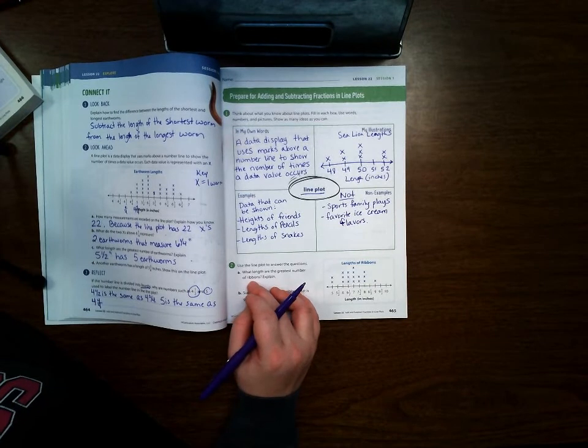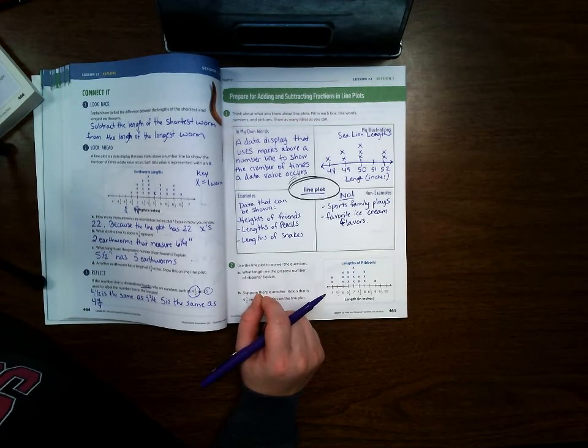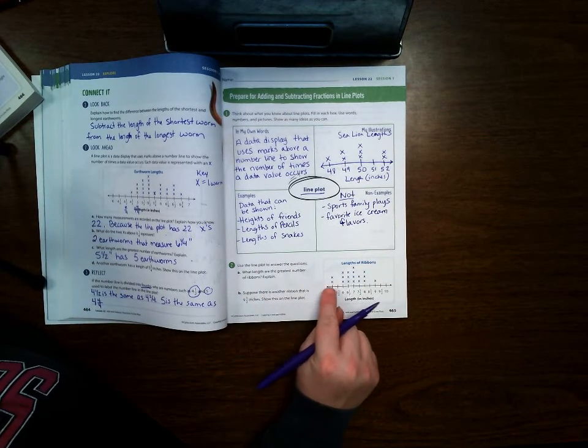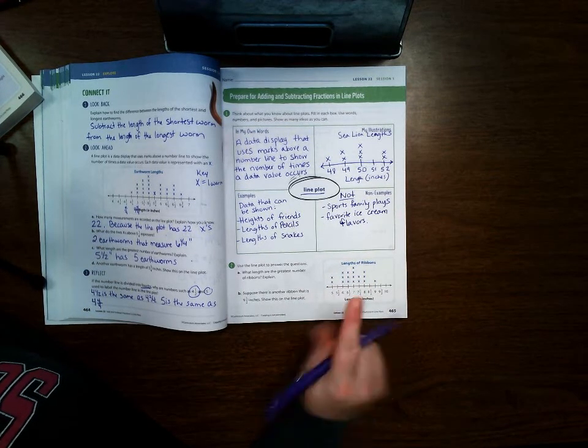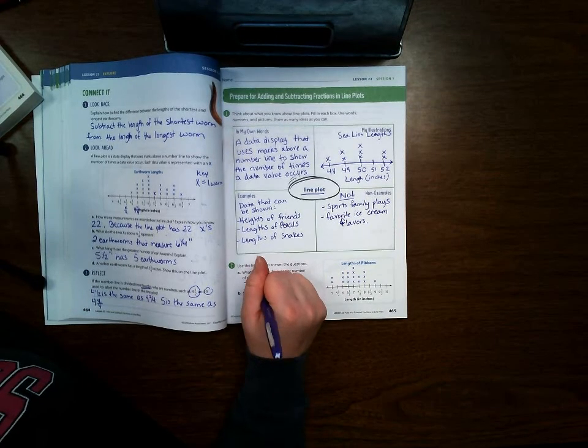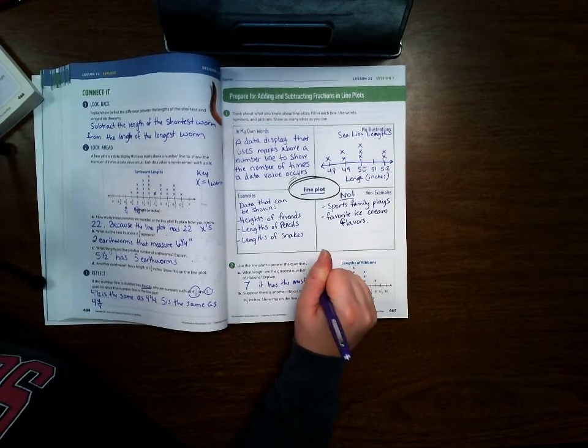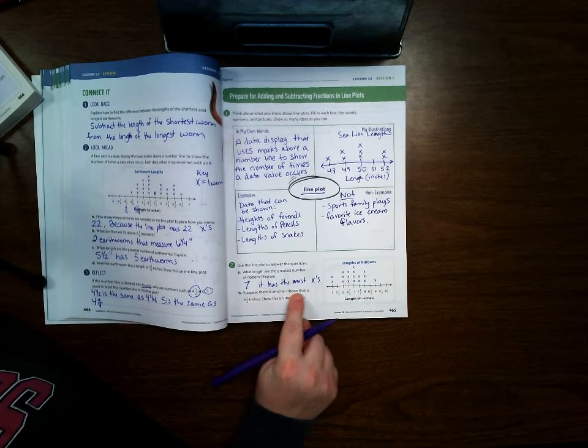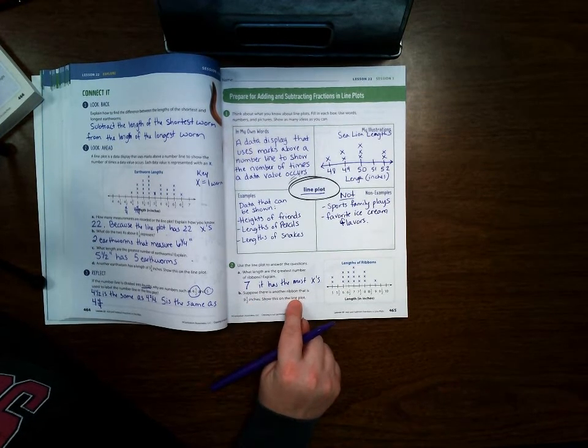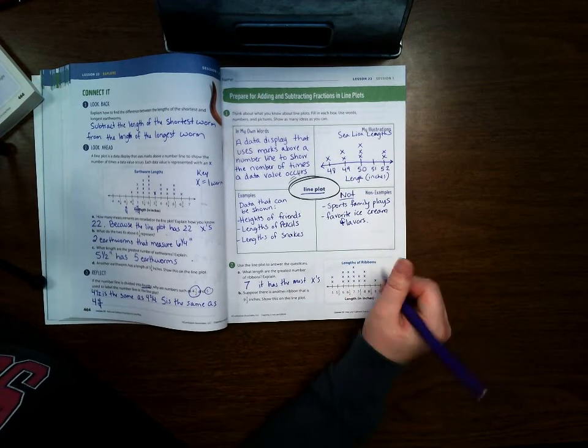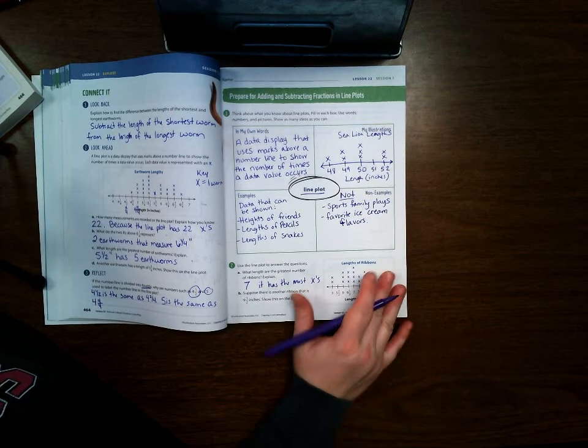Number 2A. Use the line plot to answer the questions. What length are the greatest number of ribbons? So I'm going to look over here and which one has the most x's? Seven, because it has the most x's. Suppose there is another ribbon that is nine and one half inches. Show this on the line plot. So I'm going to go over here and find nine and one half and just put an x above it.